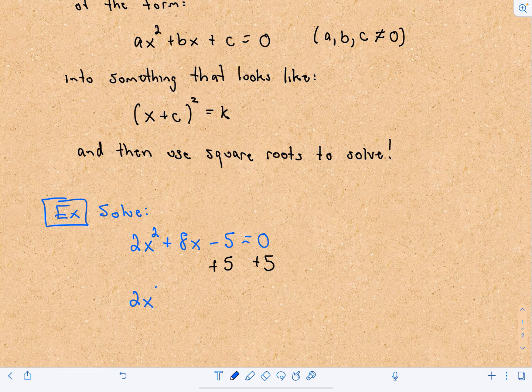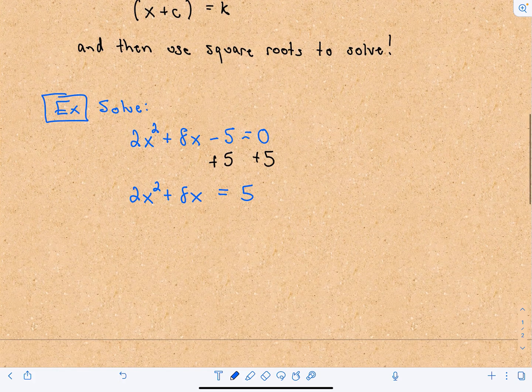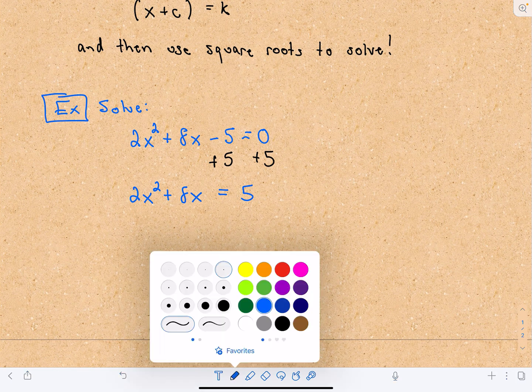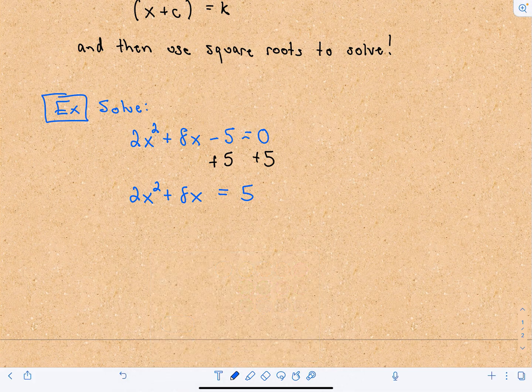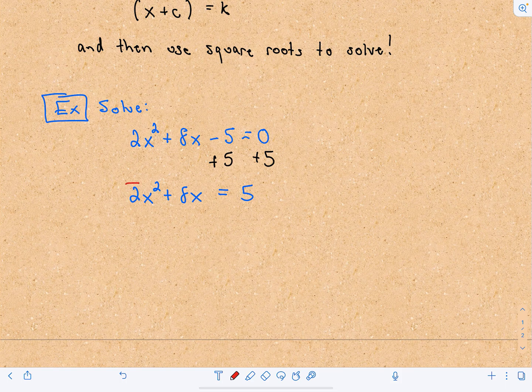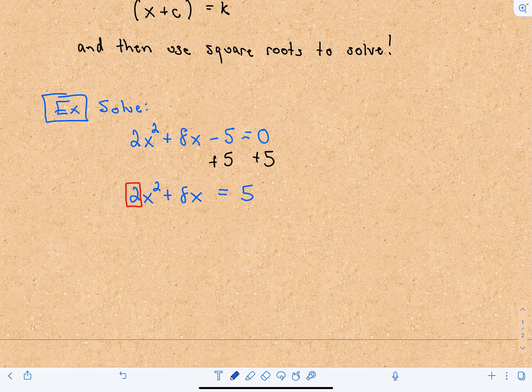That leaves me with 2x² + 8x = 5. Now on the left side I look at the coefficient in front of x². The coefficient in front of x² is 2. I factor whatever that number is out of the left side.